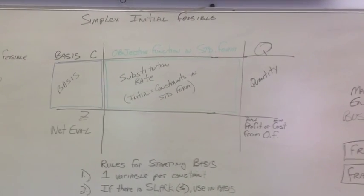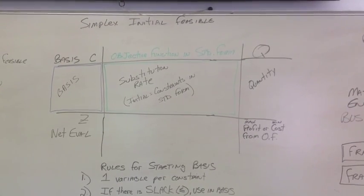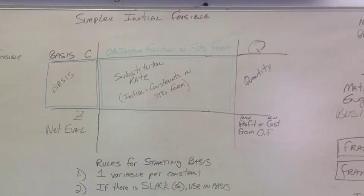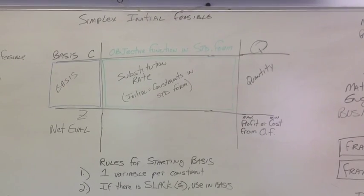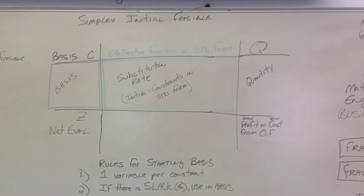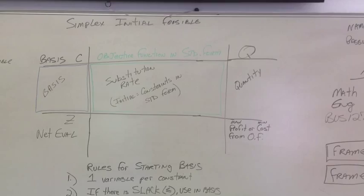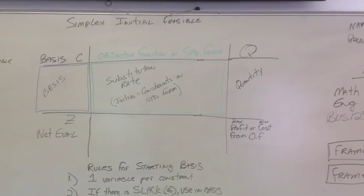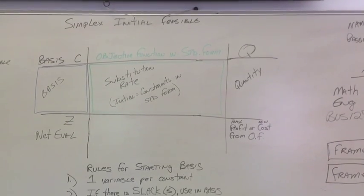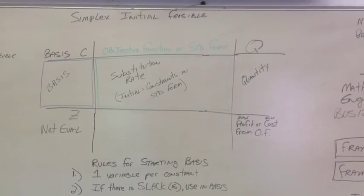But you notice on the left is what's called the basis. Basis are the variables we'll be using. C stands for the constant. If you move to the middle section, the top there is where we put the objective function in standard form. Again, we'll have the constants and the objective function for that. In the middle is what's called the substitution rate.